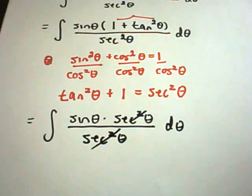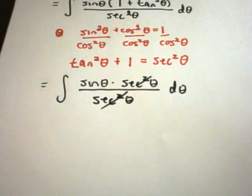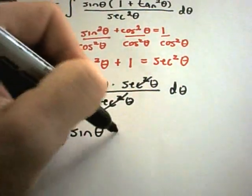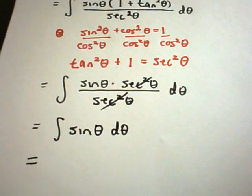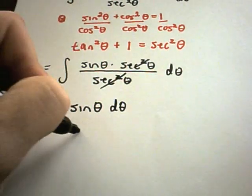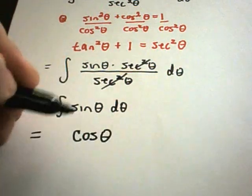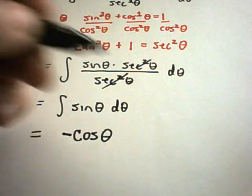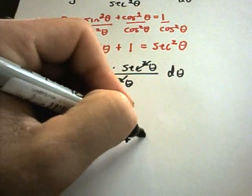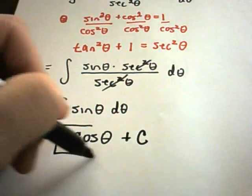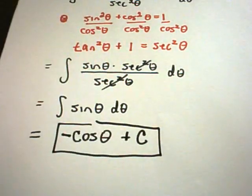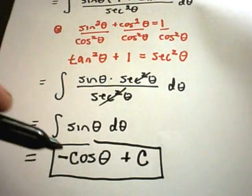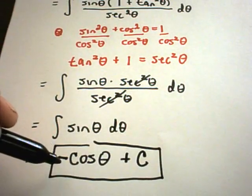The secant squared terms cancel, so all we're integrating is sine of theta. The anti-derivative of sine theta is negative cosine theta — because the derivative of cosine theta is negative sine — and then we tag on plus c. For something that looked like a pretty complicated integral at first, we end up with a relatively simple anti-derivative.